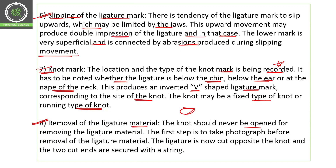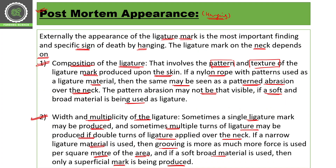Regarding removal of the ligature material — the knot should never be opened for removing the ligature. If removing a person from a ceiling, fan, or any point of suspension, do not open the knot. The first step is to take photographs before removal of the ligature. The ligature is then cut opposite to the knot, and the two cut ends are secured with a string. The knot is never opened or cut in any case of hanging. These are the factors which affect the external findings in post-mortem examination.